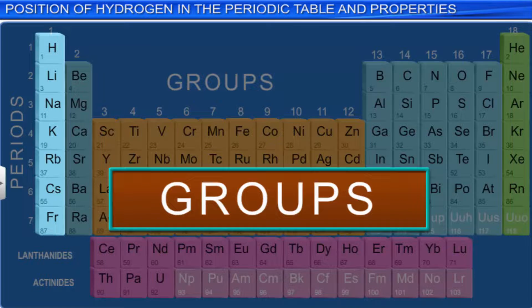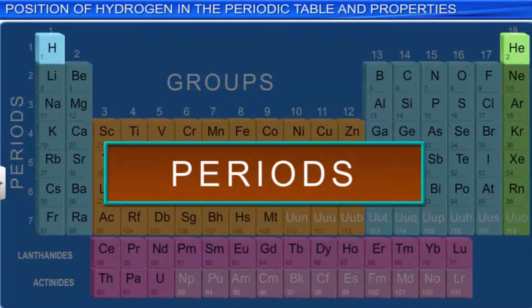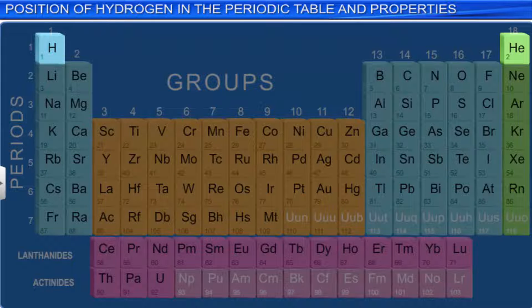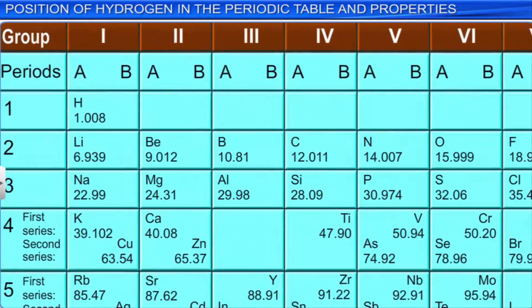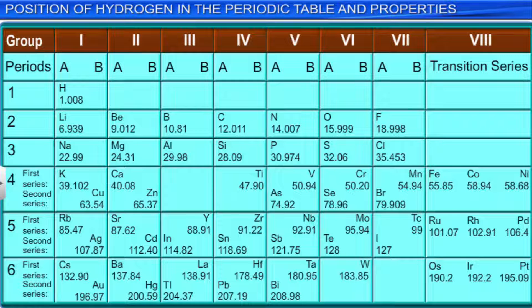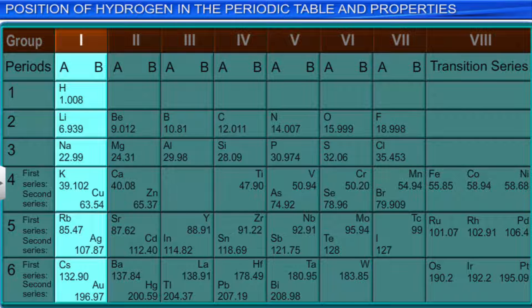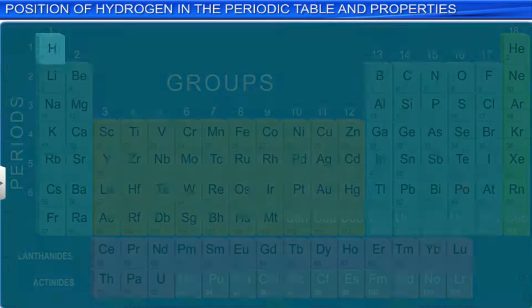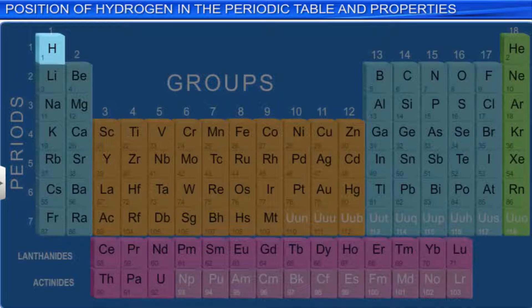Hydrogen belongs to the first group and the first period of the periodic table. Since it belongs to the first group, it is expected that the properties of hydrogen should be similar to those of the other members of the group. But that is not the case. The position of hydrogen has always been a question of debate since the time Mendeleev presented his periodic table. This is mainly because some properties of hydrogen resemble those of the alkali metals in group 1, while others are similar to those of halogens in group 7. Hence, we may conclude that hydrogen shows a dual nature.